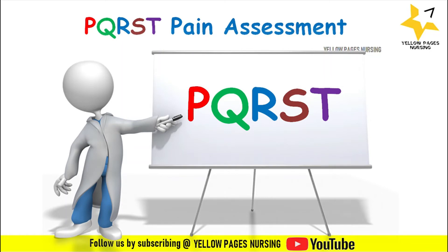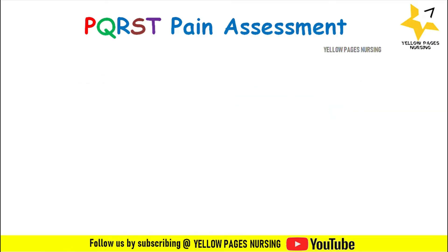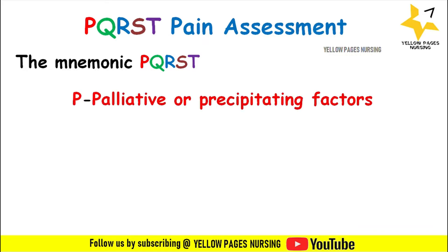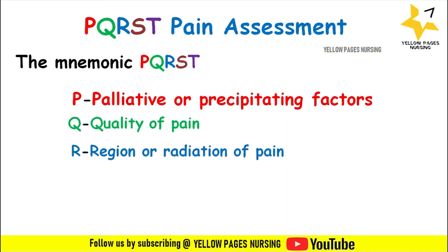The PQRST method accurately describes, assesses, and documents a patient's pain. It also helps in the selection of an appropriate treatment regimen and evaluating the response to treatment. The mnemonic PQRST stands for: P — Palliative or Precipitating factors, Q — Quality of pain, R — Region or Radiation of pain, S — Severity of pain, and T — Timing.